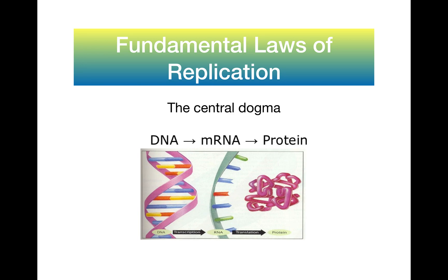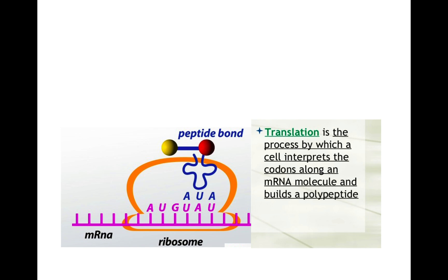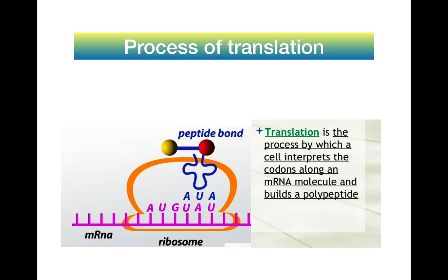The mRNA is the thing that is going to be translated into protein. Translation is the process by which a cell will interpret the codons along the mRNA molecule to build the polypeptide and to build the protein. The ribosome is the protein unit that's actually reading the mRNA, and that means mRNA is necessary for the process of translation — just like something being written down and then translated.